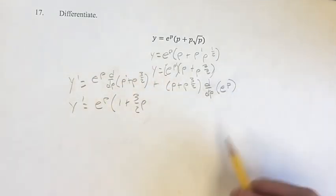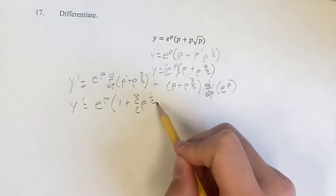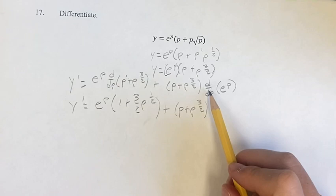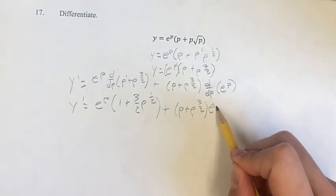So the new exponent is going to be three-halves minus one, p to the one-half. Plus p to the three-halves times the derivative of e to the p is just e to the p.